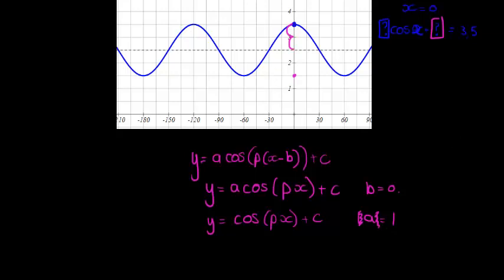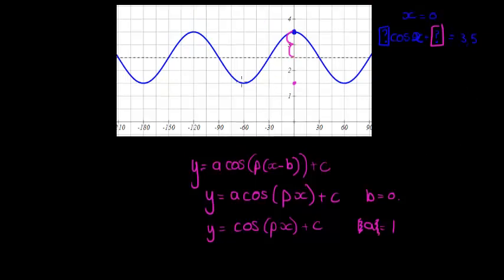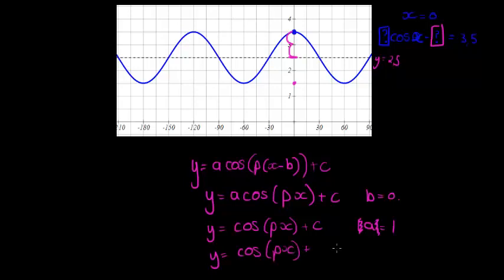Now we just need to find p and c, where c is the center line. We can see the center line is at y = 2.5. So c = 2.5, and the equation becomes y = cos(px) + 2.5.